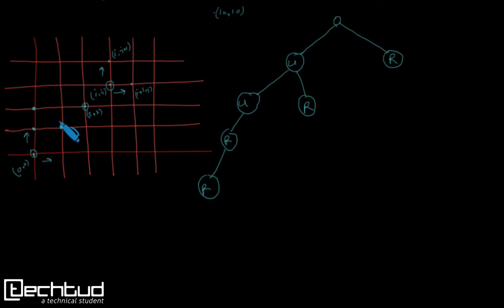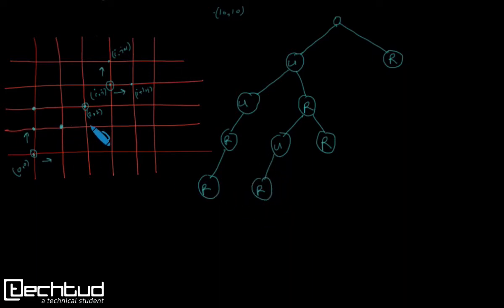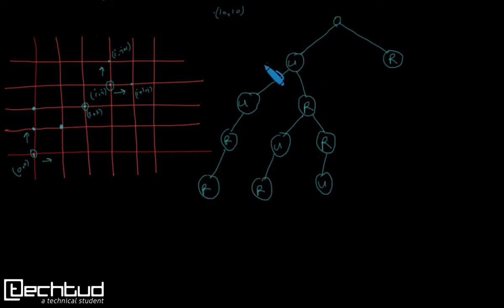If instead from origin we first took one up and then a right, we're at an intermediate point. Here again we have two choices — up or right. If we take up we then must take a right to reach 2,2; or if we take right we must take an up to reach 2,2. That covers all possibilities from the first up move.